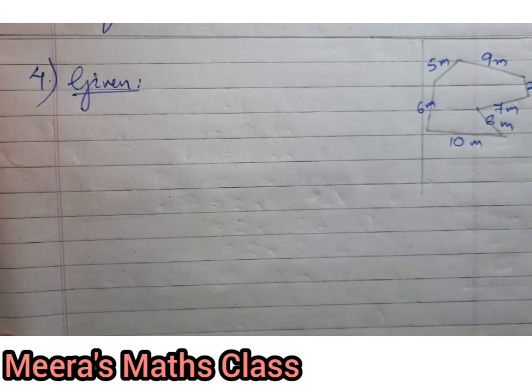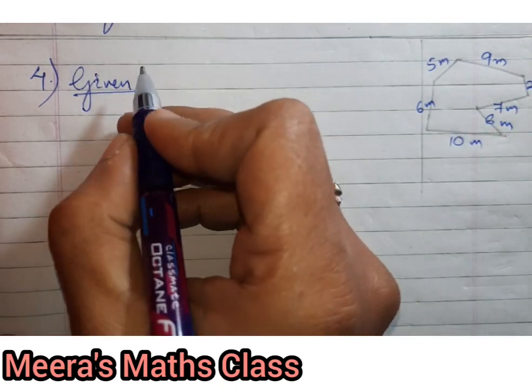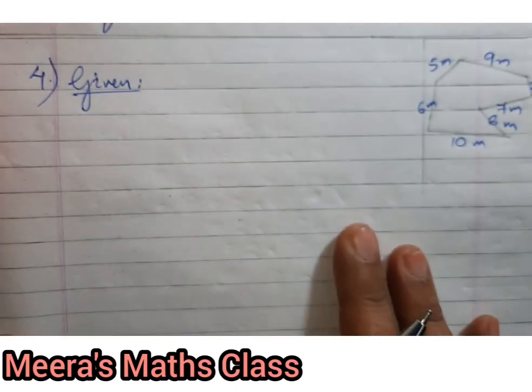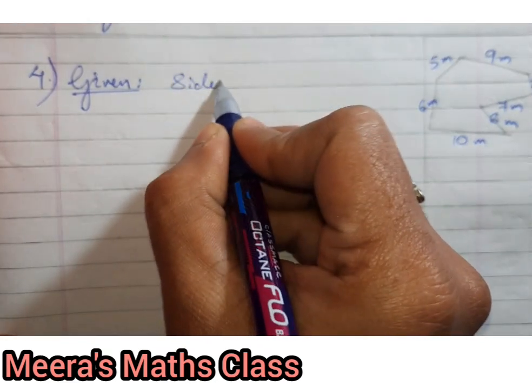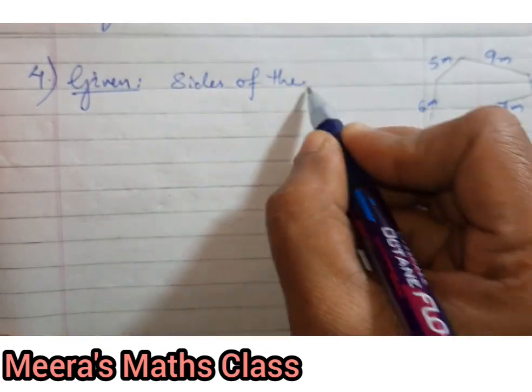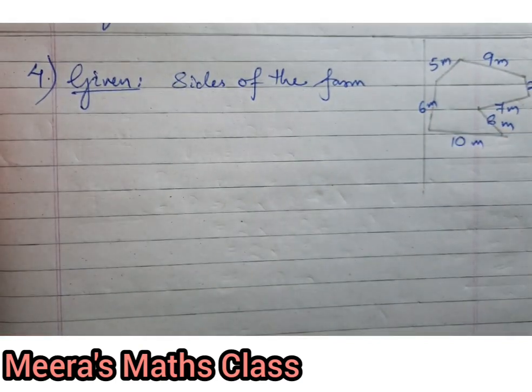So let's see how to solve this question. Okay, let me draw the rough figure. So here is the rough figure. Rough figure I have just drawn so that it'll be easy for me to write down. Okay, now given: what is given? Sides of the farmhouse, isn't it?